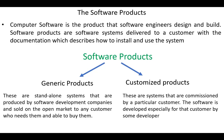In general, software products are classified into two types: generic products and customized products. Generic products are standalone systems that are produced by software development companies and sold on the open market to any customer who needs them and is able to buy them.